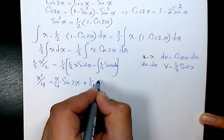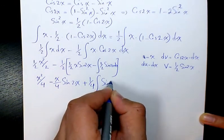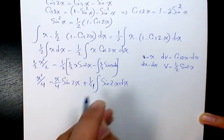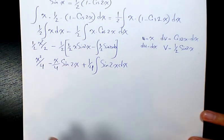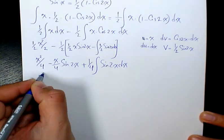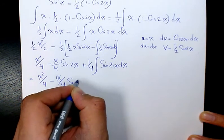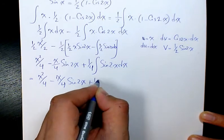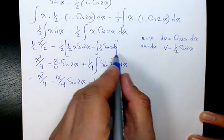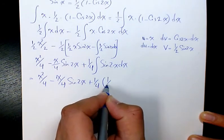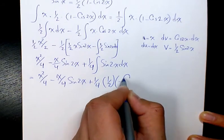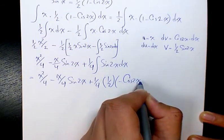So it's going to be x squared divided by 4 minus x over 4 sine 2x plus 1 over 4, and here integration of this part is going to be negative 1 over 2 cosine 2x.